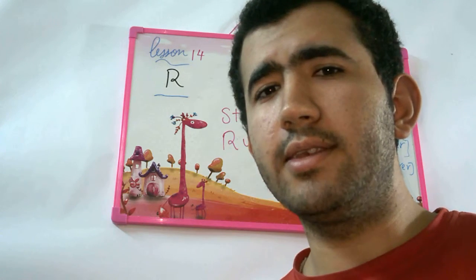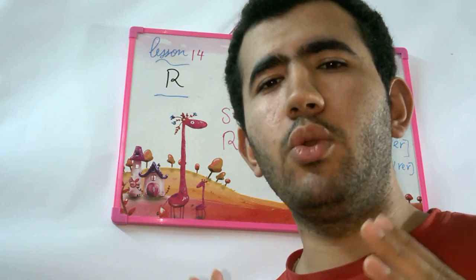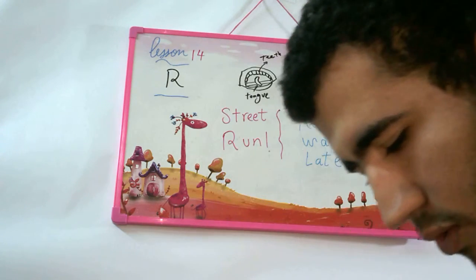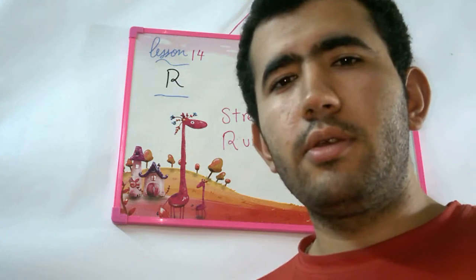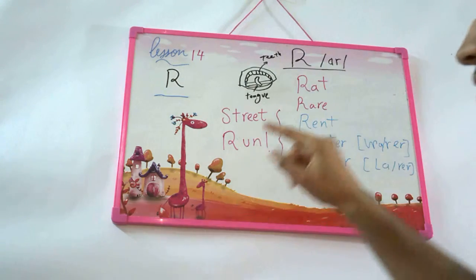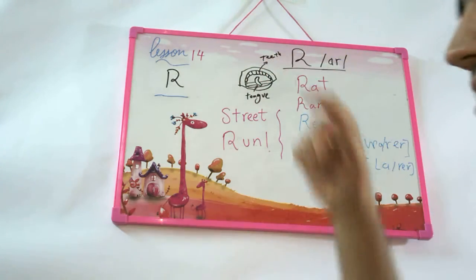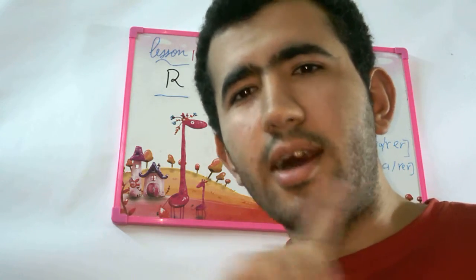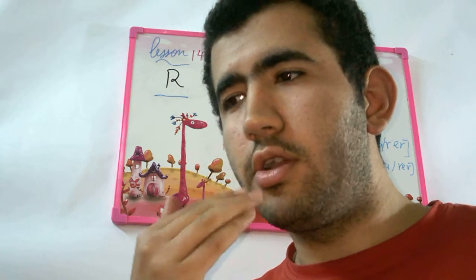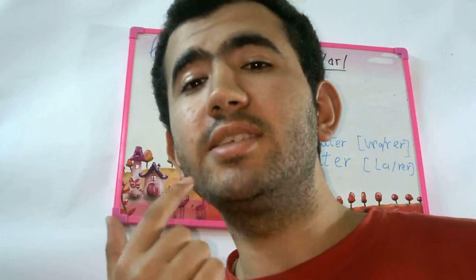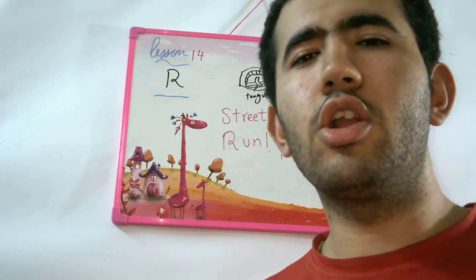It's about the R sound, which if you handle it and you say it right, then you are a perfect American speaker. So remember the R sound — if this is your tongue, it has to be like this. This is your teeth and this is your tongue. Your tongue must not touch your teeth or the ground. It has to be like this while you're saying R in any sound.